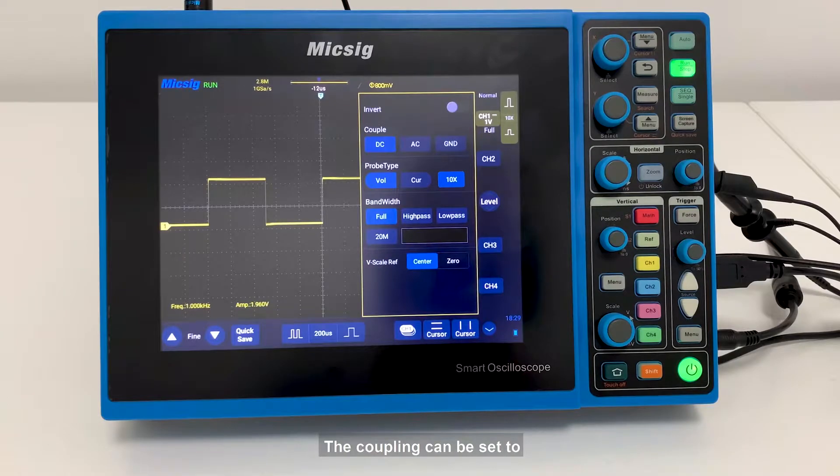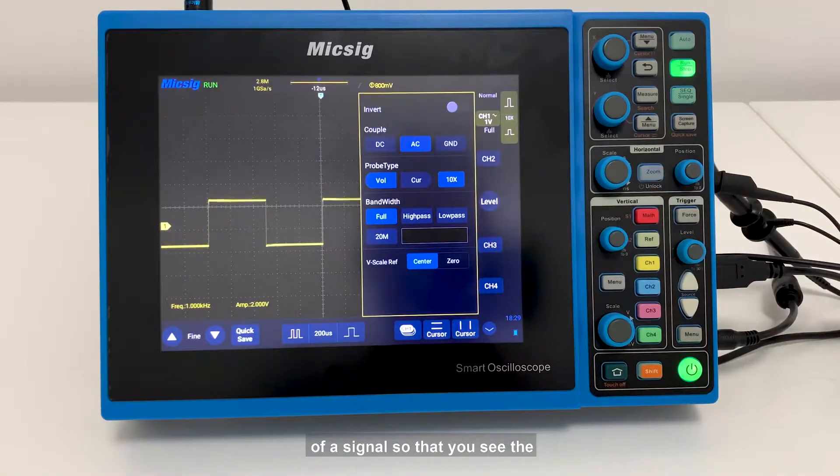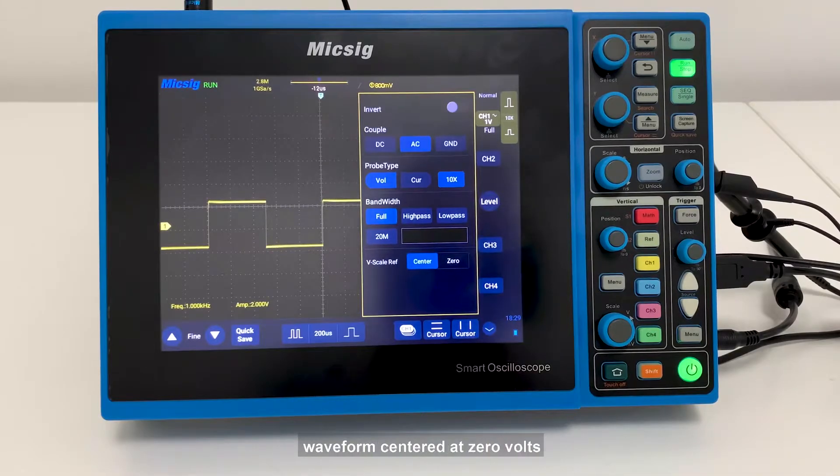The coupling can be set to DC, AC, or ground. DC coupling shows all of an input signal. AC coupling blocks the DC component of a signal so that you can see the waveform centered at zero volts. The AC coupling setting is handy when the entire signal is too large for the voltage per division setting.